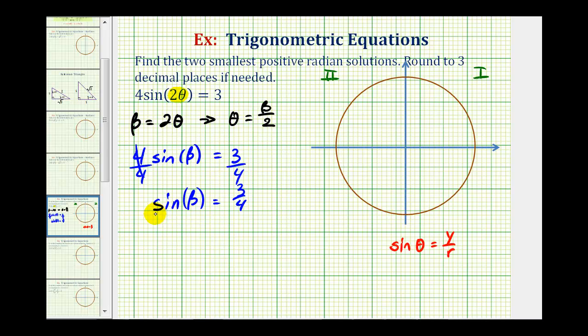Next, since we have to use the calculator to help us find one of the solutions, if sine beta equals three-fourths, then beta is going to be equal to arc sine or inverse sine of three-fourths. So if we type this into the calculator, it will give us one solution for beta.